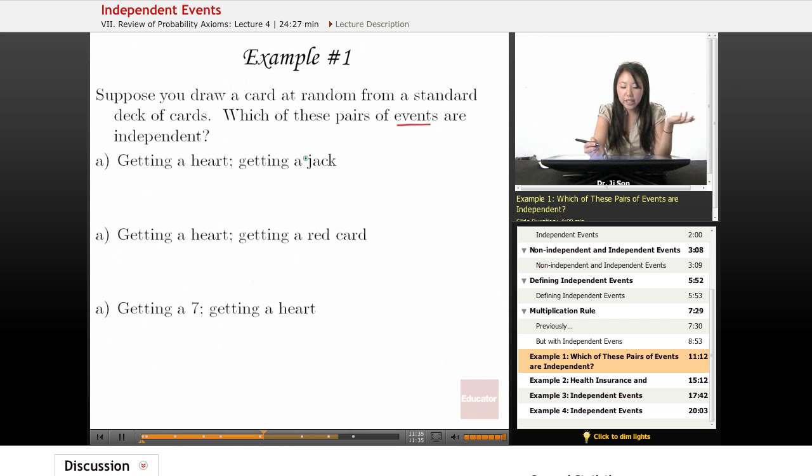So here it says, is getting a heart independent of getting a jack? Does knowing whether you have one affect the probability of the other? We could write out the rule for independence of events. Probability of heart given jack should equal the probability of heart overall. Is that true? Let's think about this. There's only four jacks, so that's my whole universe, and the probability of getting a heart is one-fourth. But then so is the probability of getting a heart overall. So I would say these are independent.